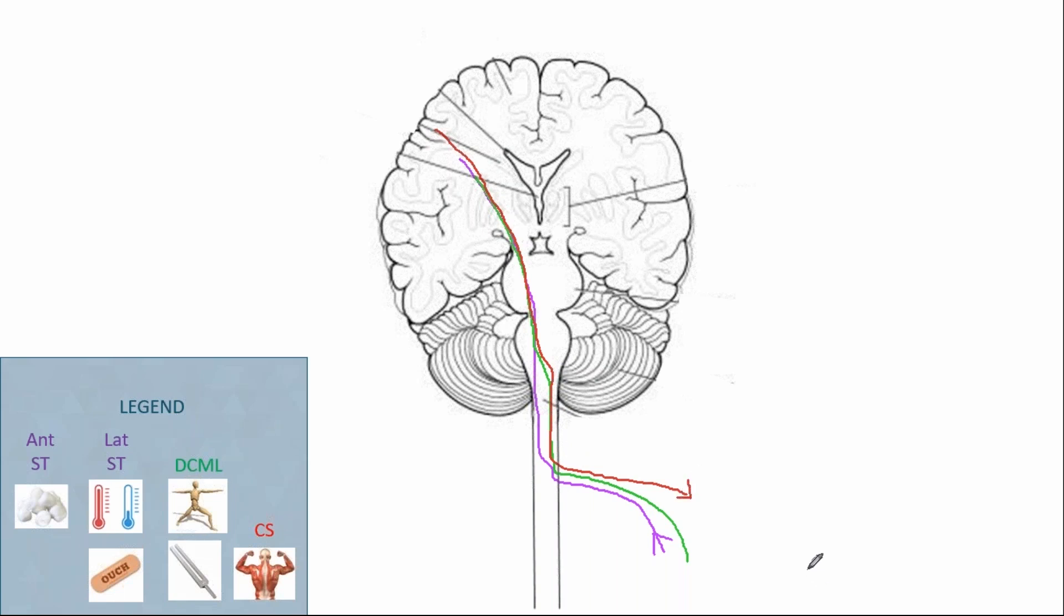So, to review, we have spinothalamic tract coming in, crossing at the level of the spinal cord. We have ascending information from the dorsal columns coming in. We'll do a little arrow here. And it ascends and crosses at the level of the brain stem. And then we have motor information coming out, and it crosses at the level of the brain stem as well.